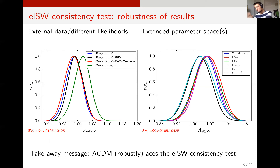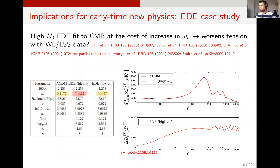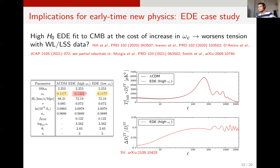This is going to present an important challenge for early time new physics, which modifies the early ISW effect. The success of early dark energy is that it can fit the CMB data perfectly with a higher H0, but this comes at the cost of an increase in the dark matter density omega_C.